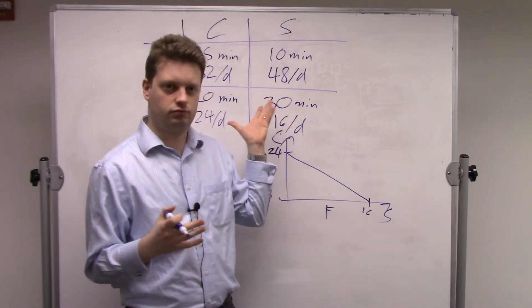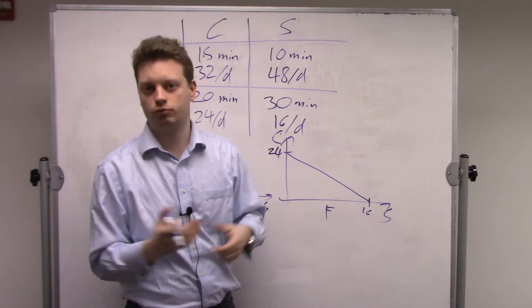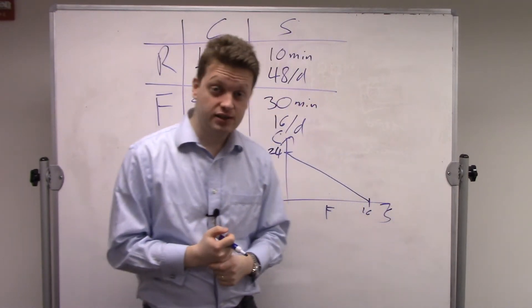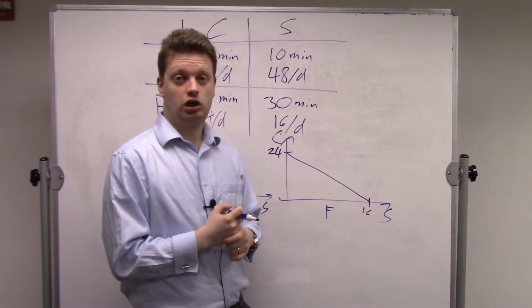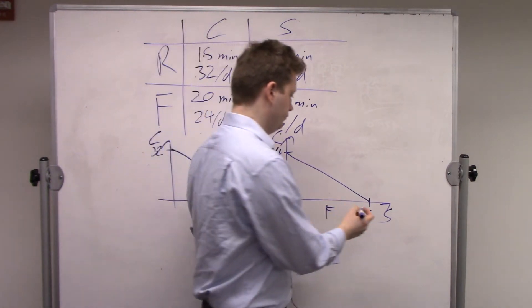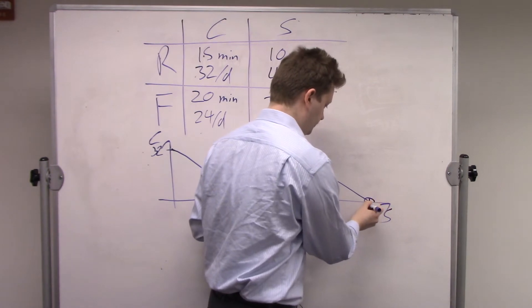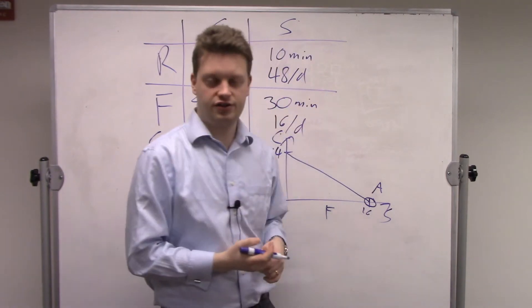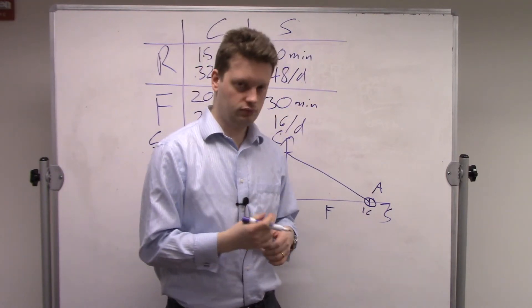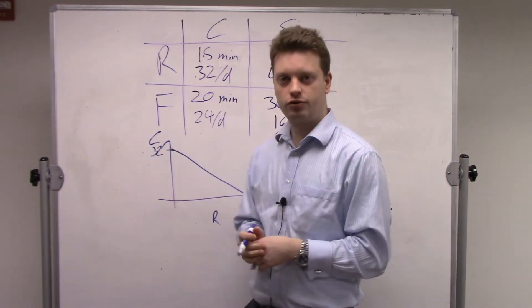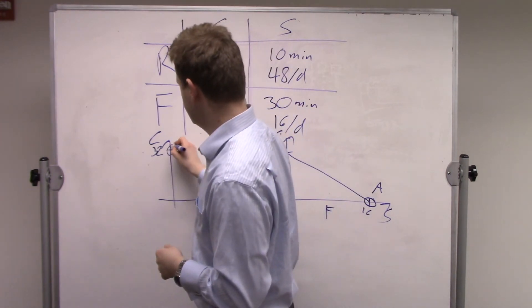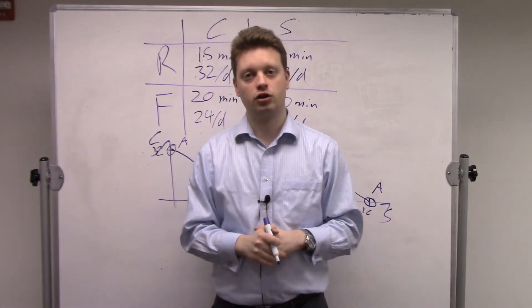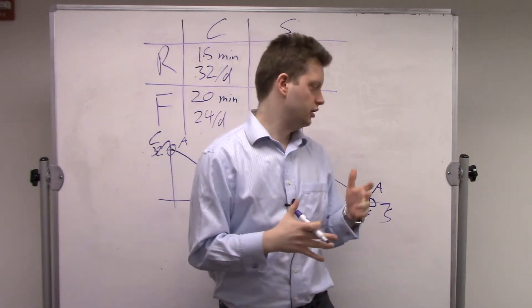We can do the same thing for Friday, and he can get 24 coconuts or 16 fish. Now let's look at what the two could do if they're on their own. Let's assume they have the following preferences. Friday only likes fish, so if he's on his own, he will produce 16 units of salmon. In turn, Robinson Crusoe only likes coconuts, so he will produce 32 coconuts.